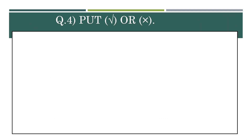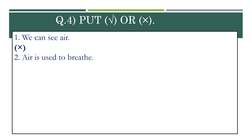Now we will see question number 4 — put right or wrong. First: We can see air. Children, can we see the air? No, we can't see the air, we can only feel it. So, cross mark. Number 2: Air is useful to breathe. Yes, air is useful to breathe. So, we will write tick mark.